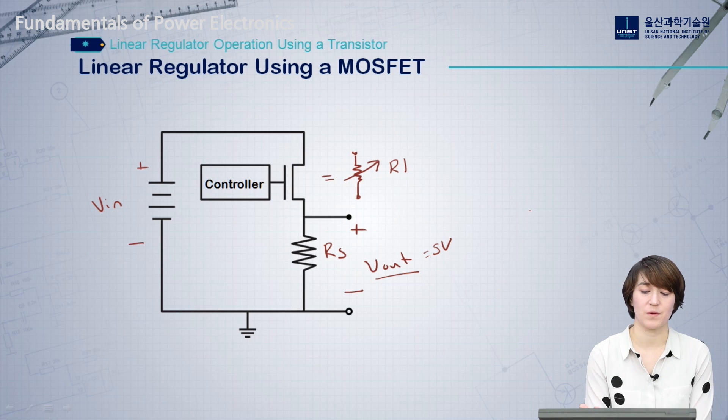So, using this system, we use a MOSFET that's controlled in the linear region to act like a variable resistor, and we can step down a higher DC voltage to a lower DC voltage here, and maintain a desired output voltage.